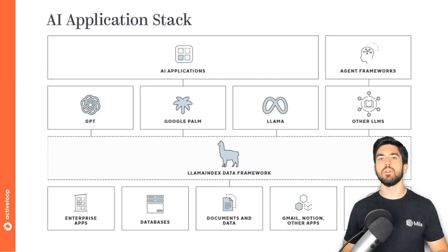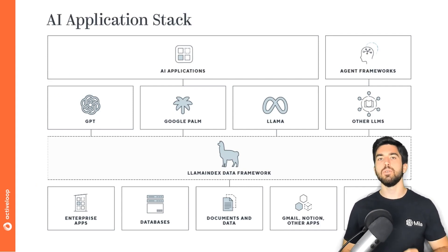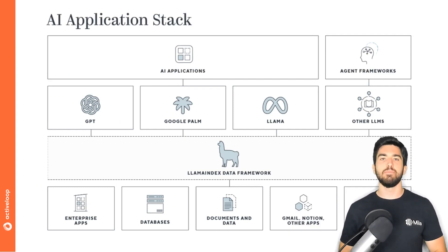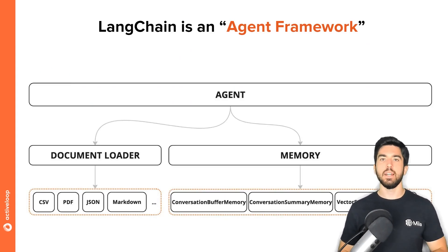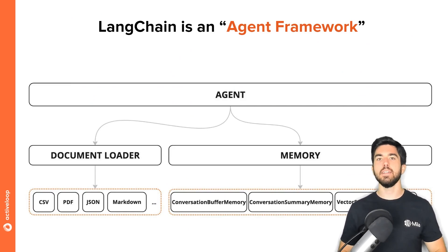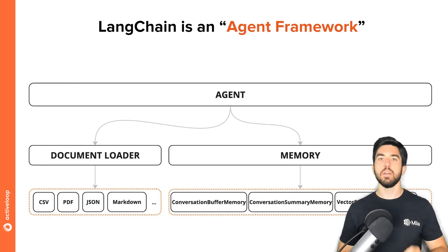LlamaIndex is a data framework that provides data ingestion, data indexing, and a query engine for retrieval and synthesis of enterprise data for LLMs. Its main goal is to easily allow LLMs to be augmented using private data, integrating with as many data sources as possible. LangChain, instead, is an agent framework designed to assist developers in building end-to-end applications using language models. LangChain offers a standard interface for memory, a variety of memory implementations, and examples of chains and agents that employ memory.